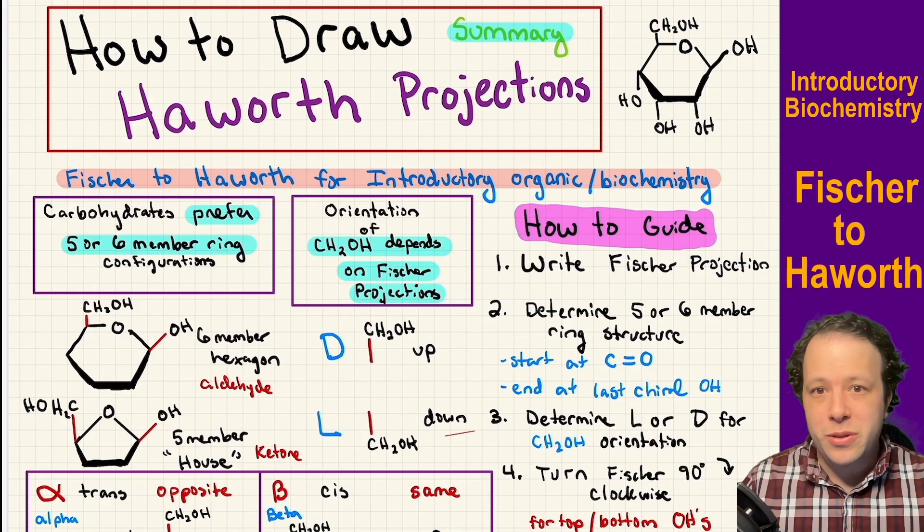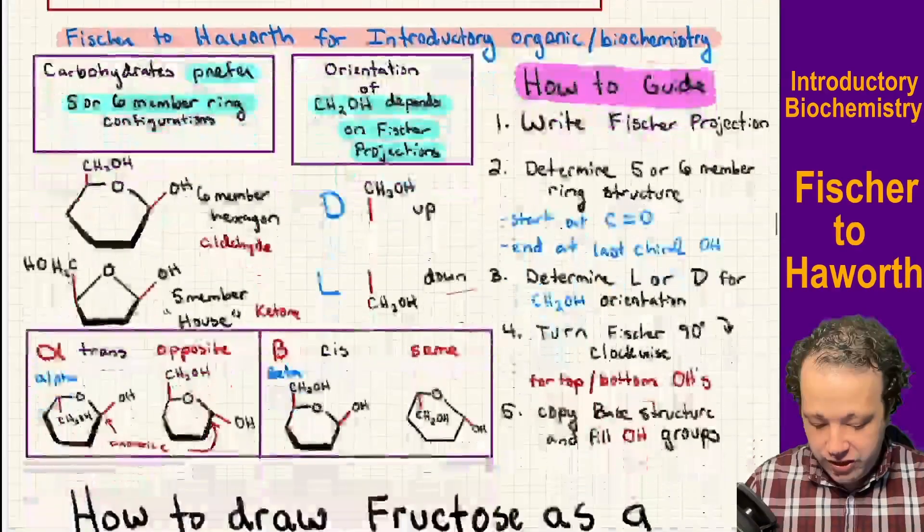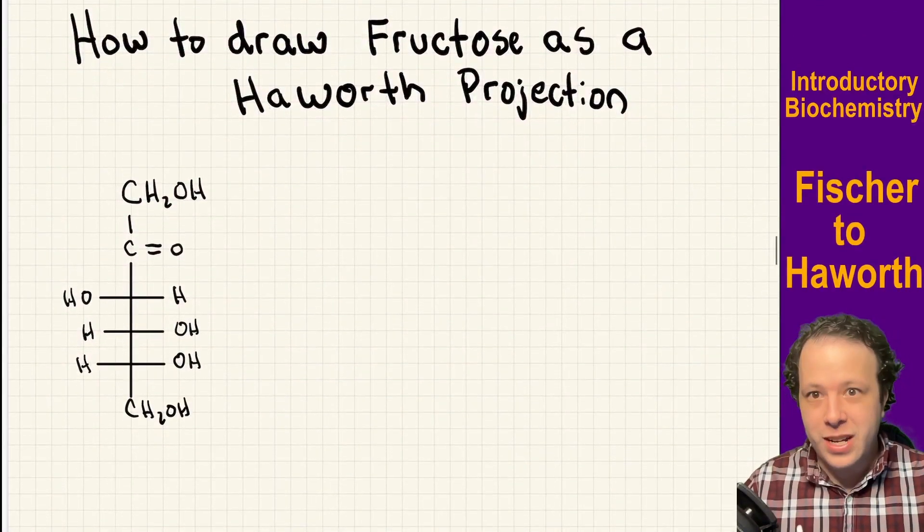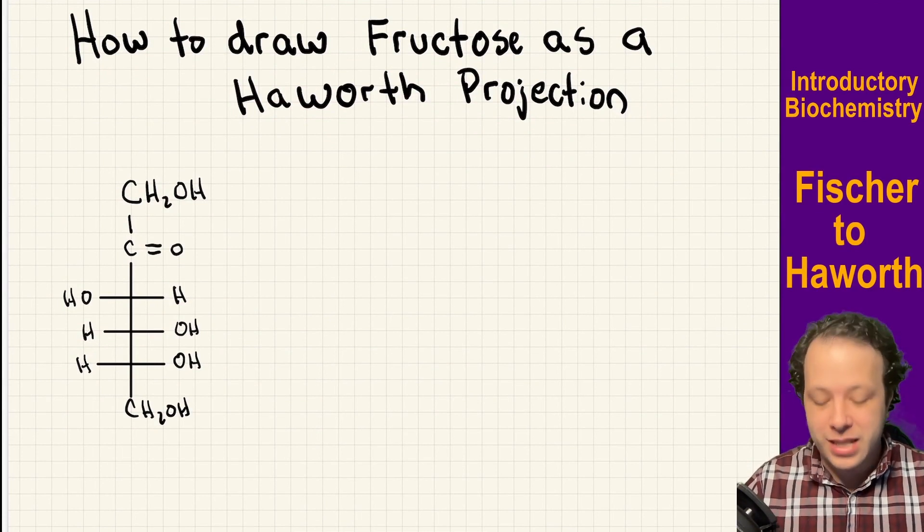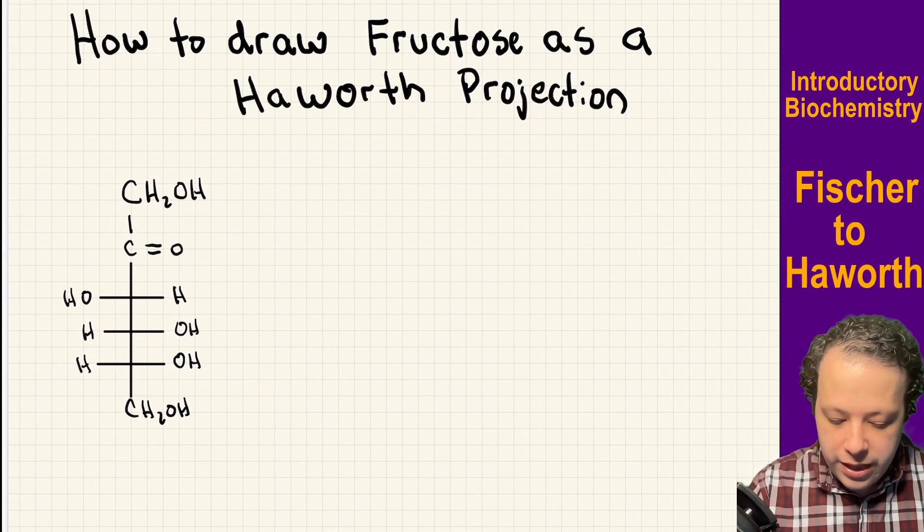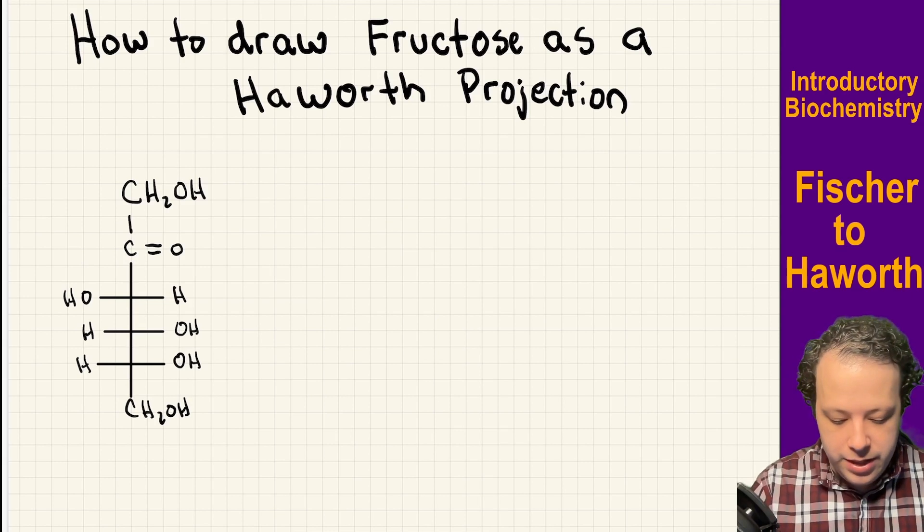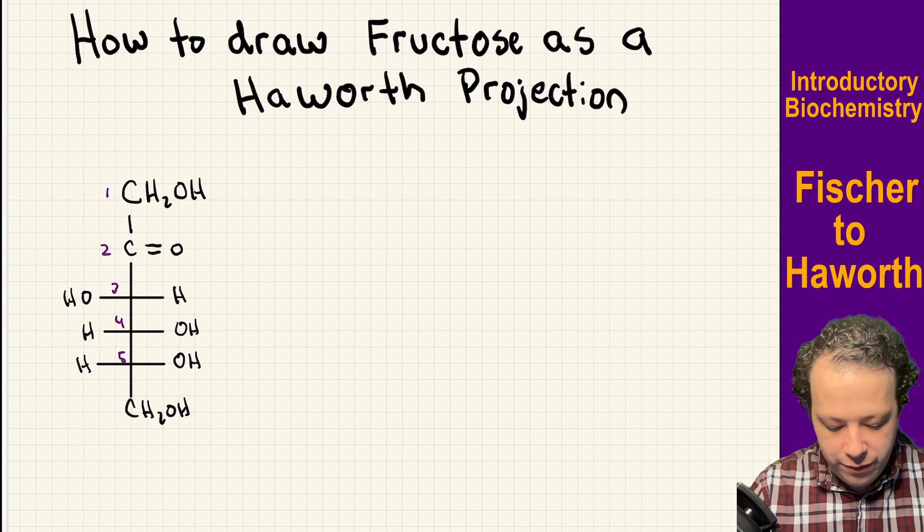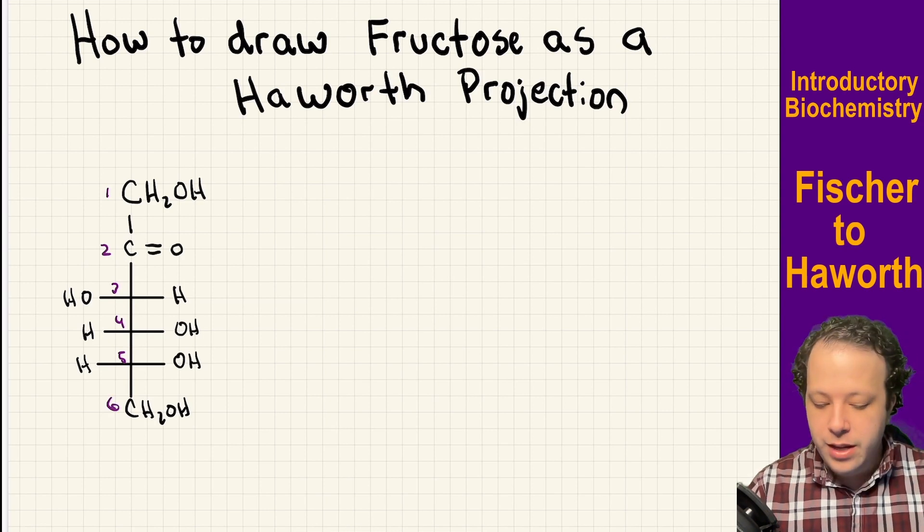The first thing we're going to do is write down that Fischer projection. When we have that Fischer projection, the first thing we're going to go through is number our chain. So this is our official numbering: 1, 2, 3, 4, 5, 6.